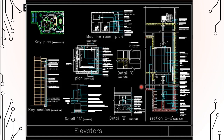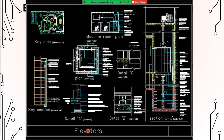This is an example of a detailed drawing of an elevator. You can see the key plan showing the elevator location, a section with identified components, the plan of the machine room, the plan of the pit with the buffer at the lower floor, and sections showing the important parts or components of the elevator.